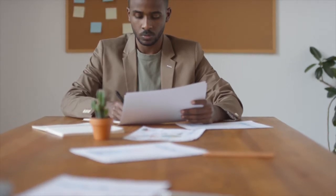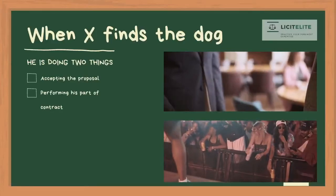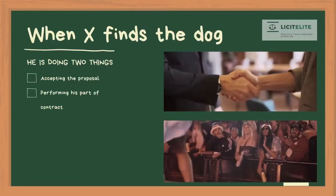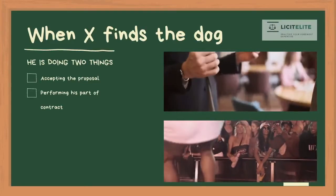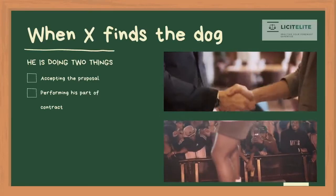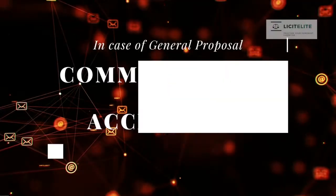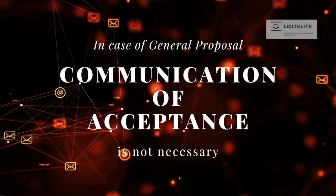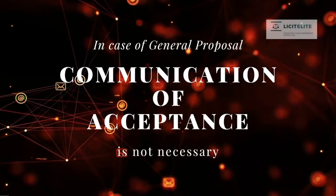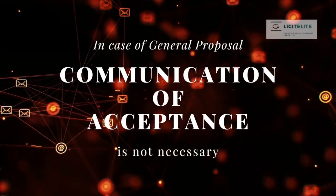And when it is accepted, it will go on to become a contract. So when X finds the dog of A, he is doing two things: first, he is accepting the proposal which was made by A, and second, he is performing his part of the contract. Communication of acceptance is not necessary in the case of a general proposal. Here the acceptance can be communicated by the conduct.